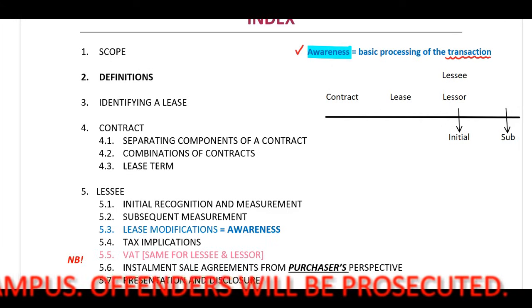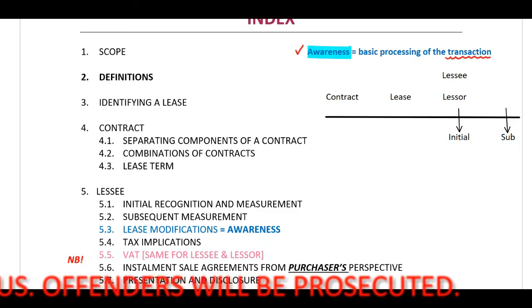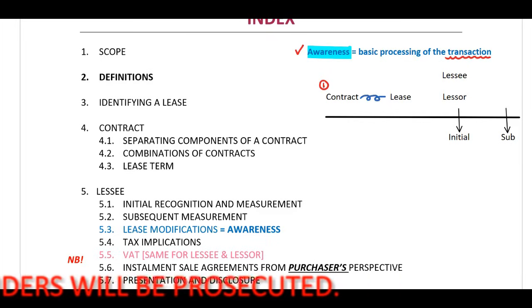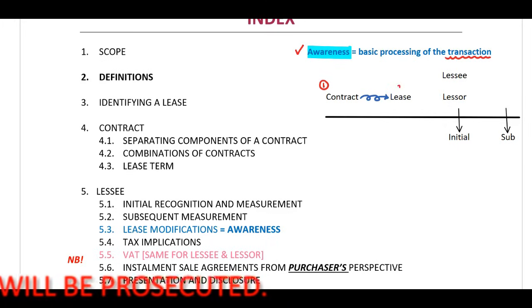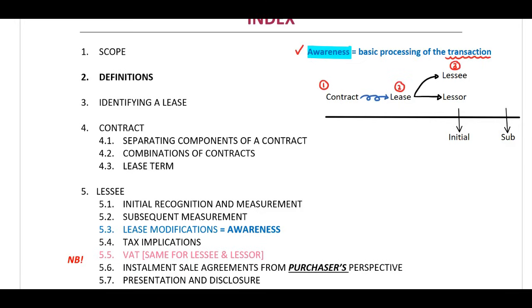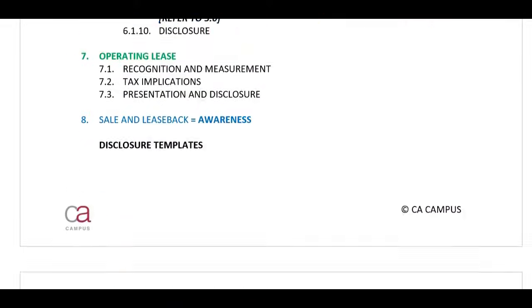When we look at IFRS 16, first we need to identify if there is a contract. Once we are able to identify if this contract is a lease in terms of IFRS 16, IFRS 16 will indicate to us the principles on how to account for this lease in our records of our lessee as well as our lessor, in terms of initial recognition and measurement as well as subsequent recognition and measurement. You are able to work through the contents page on your own.